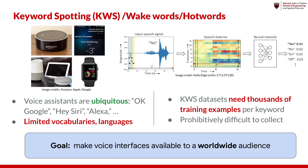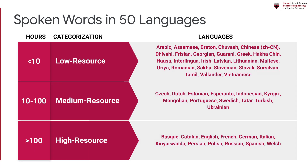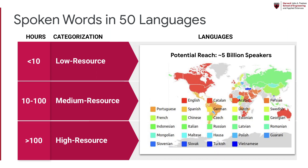Our objective is to make keyword spotting available for any keyword in any language. We have one-second spoken word examples in 50 languages. We categorize each language based on the number of hours present in our dataset. For instance, we have over 100 hours of keyword data in 12 high-resource languages. In total, these 50 languages are currently estimated to be spoken by over 5 billion people.